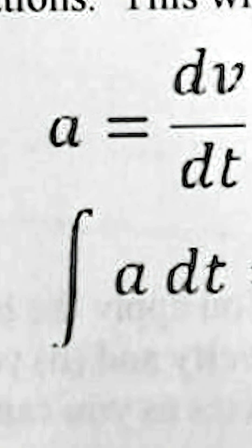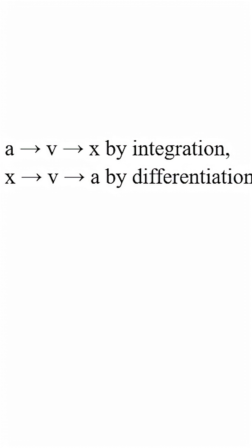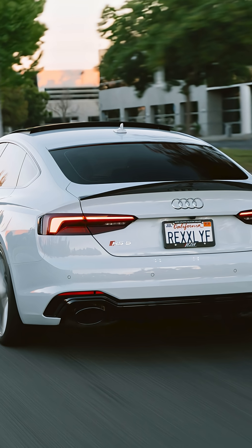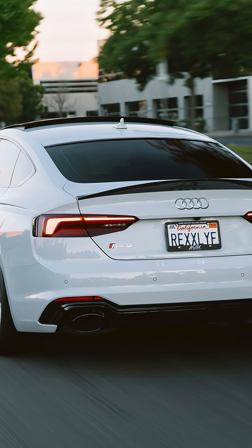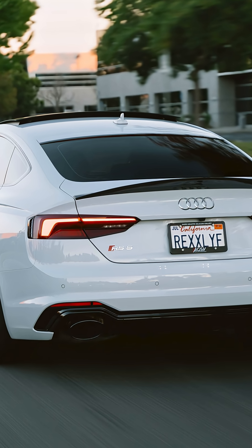And it works backwards too. If you integrate acceleration, you get velocity. Integrate velocity, and you get position. That's the full chain: A to V to X by integration, X to V to A by differentiation. Position, velocity, and acceleration aren't separate — they're three layers of the same motion story.